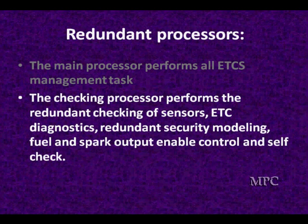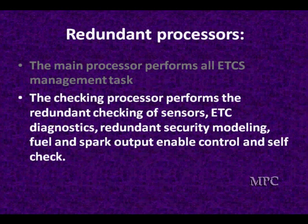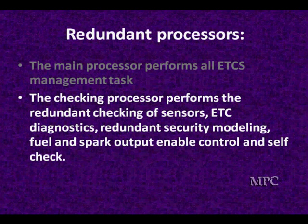The checking processor performs a redundant checking of the sensors. Do all the TPS sensors look the same? Are the accelerator pedal positions doing what they should be doing? Are they all correct in reading, in range, meeting performance standards, doing comparative things? It does the diagnostics — is the throttle stuck open or stuck closed? It does redundant security modeling. When the motorist requests 50% torque by moving the throttle, what engine RPM does that equate to? Are we in drive, torque converter locked up — all these other variables are taken into account? It's trying to model itself to know if the vehicle is doing the right thing for safety sake.